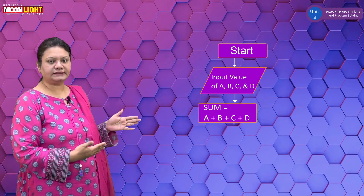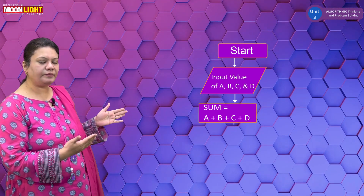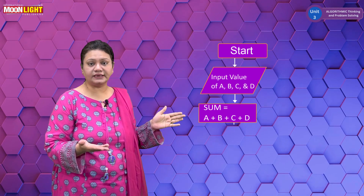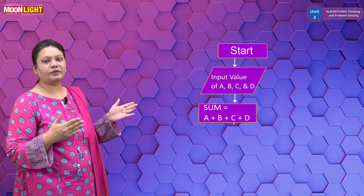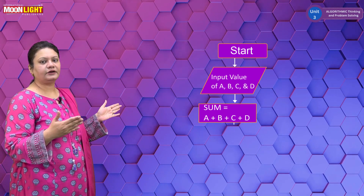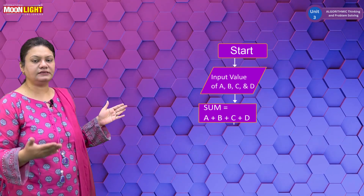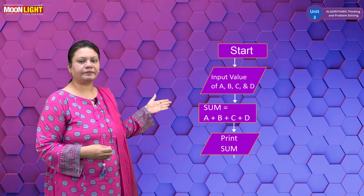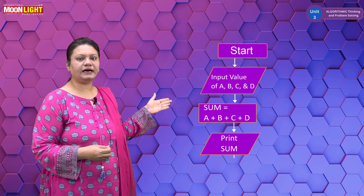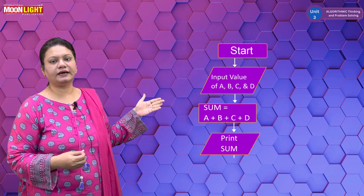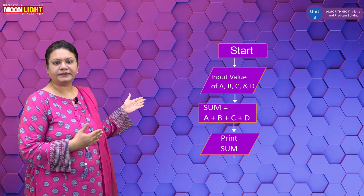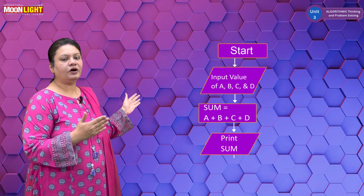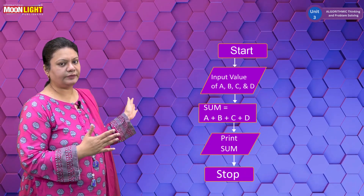Then you have to add the processing sign. We want to add the values to get a sum. You write: Sum is equal to A plus B plus C plus D. Then in the fourth step, you will see the output display — you will print the sum. And then you will stop there.